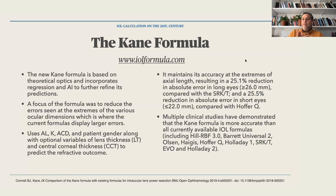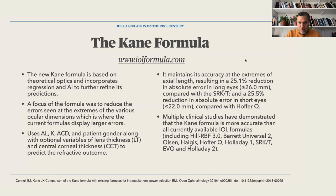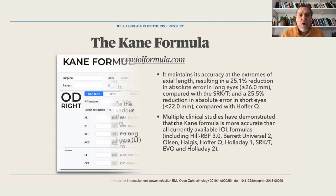SRKT performs well for long eyes and Hoffer Q for short eyes, but compared to both, the Kane formula performs even better. Multiple clinical studies have demonstrated that the Kane formula is more accurate than all currently available IOL formulas including Hill RBF, Barrett, Olsen, Haigis, Hoffer Q, Holladay 1, SRKT, EVO, and Holladay 2. The use of artificial intelligence to further refine predictions gives this formula great results.